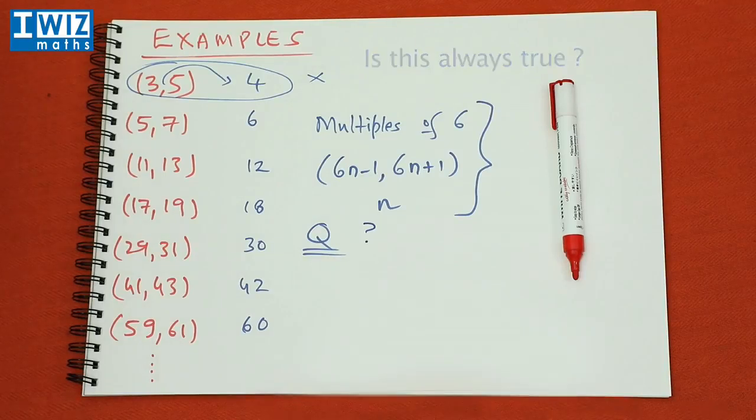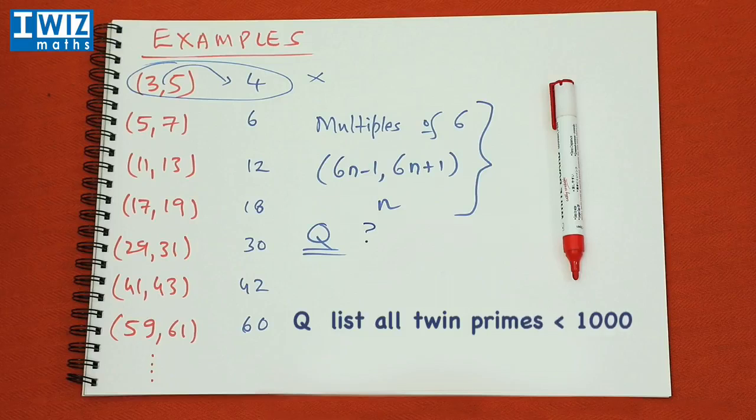We'll leave you with another question and that is, can you list all twin prime numbers less than a thousand?